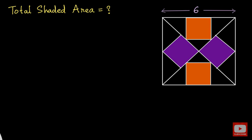Hello everyone. In this video we are given a geometric figure where we have a square of side length 6, and inside this we have two brown squares and two purple squares. Our goal is to find the area of the shaded region — that is, we have to find the area of the brown region and the area of the purple region.